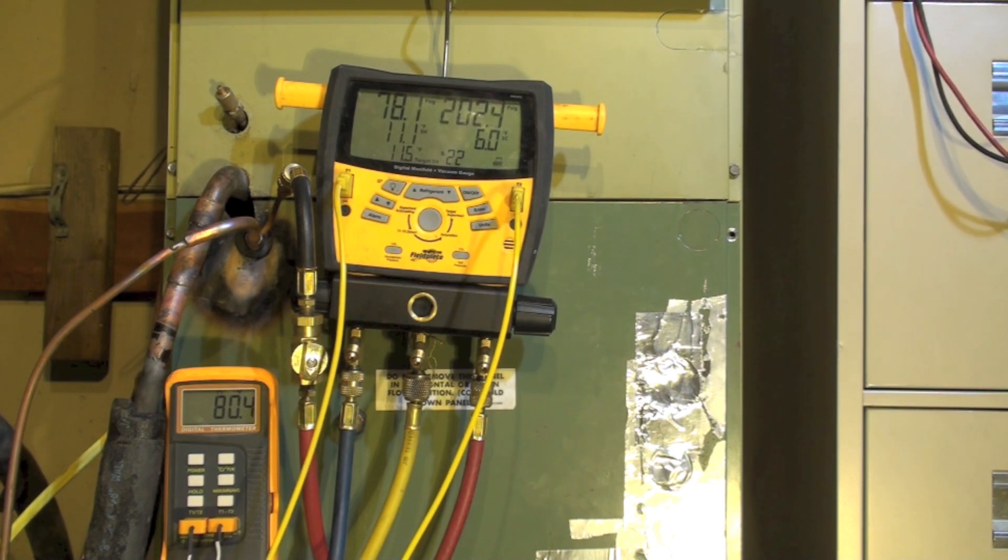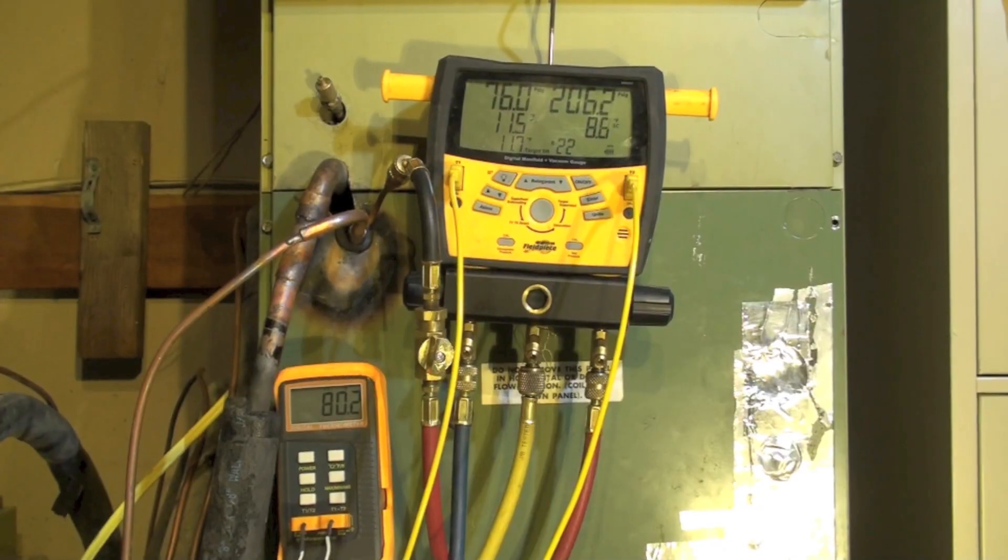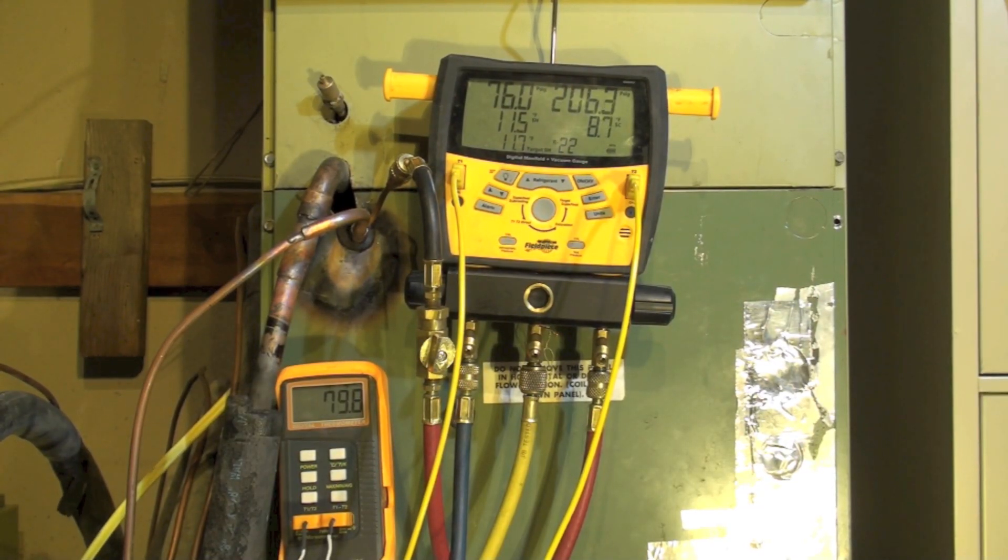Subcool 5.5, superheat 11.2. Target superheat is 11.5, so by weighing this in we actually got this thing pretty close. It looks like the temperature difference across the coil is about 21 degrees, so we're looking pretty good on this thing. That's a weigh-in charge.